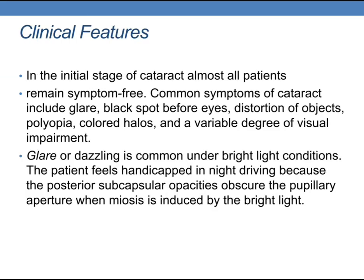Regarding the clinical features of senile cataracts: in the initial stage, almost all patients remain symptom-free. Common symptoms include glare, black spots before the eyes, distortion of objects, polyopia, colored halos, and a variable degree of visual impairment. Glare or dazzling is common under bright light conditions. The patient feels handicapped in night driving because the posterior subcapsular opacities obscure the pupillary aperture when miosis is induced by bright light.